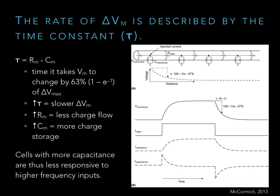If we know the membrane resistance and capacitance, we can calculate tau — the amount of time it takes to change the membrane potential by about 63% of its maximum. If you have more membrane, you have a larger capacitor; you have to put more charge there to actually charge it, so you'll have slower rates of membrane potential change. Smaller neurons with less capacitance have more rapid changes in membrane potential.